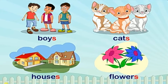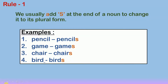When we write the plural form of a noun, we have to follow some rules. Rule number one: we usually add 's' at the end of a noun to change it to its plural form. For example, pencil becomes pencils. Here, we have added the letter 's' to change the word from its singular form to its plural form.